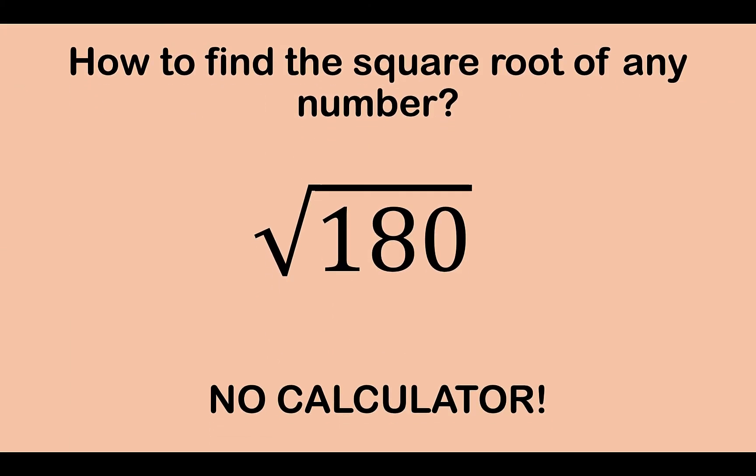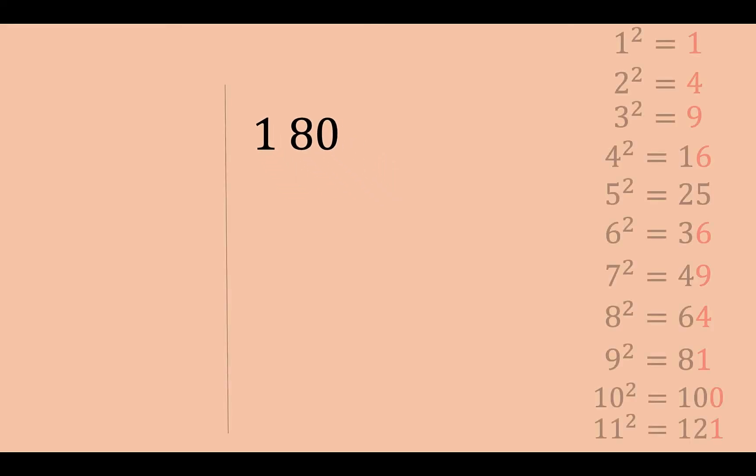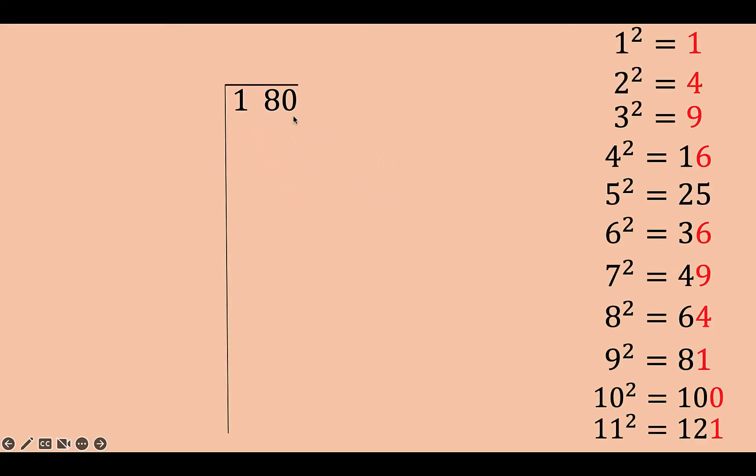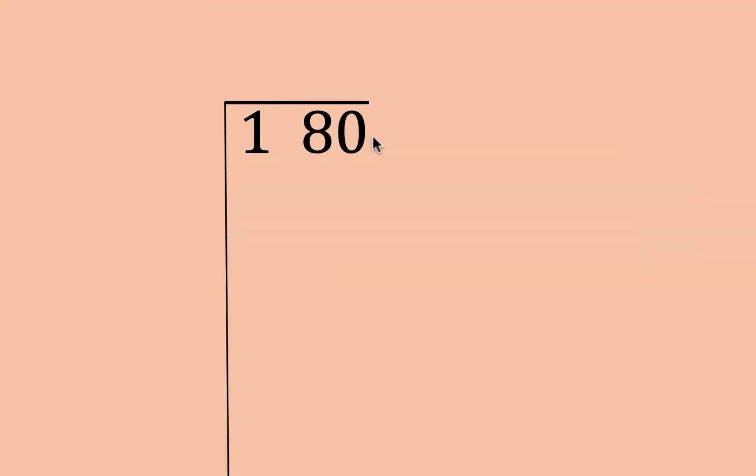Now, what if the number is not a perfect square? Let's say, what's the square root of 180? In here, we can use the division method. Now, in the long division method, here is the process. From the decimal point, group the numbers by 2. So we have 80 as one group, and 1 is alone. So we just let 1 by itself.